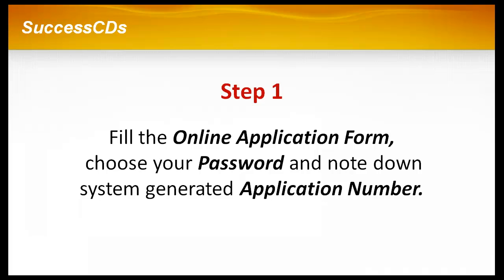Step 1: Fill the online application form, choose your password and note down the system-generated application number. Candidates should supply all the details while filling the online application form and are also required to choose a password and security question and enter their answer. After successful submission of the data, an application number will be generated, which will be used to complete the remaining steps and also required for all future correspondence.